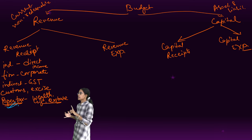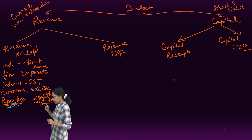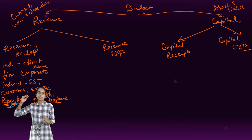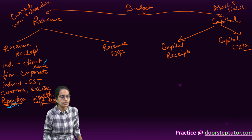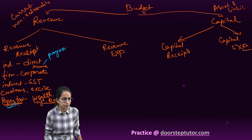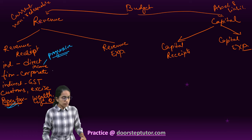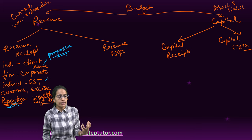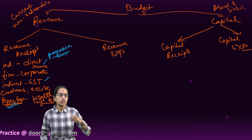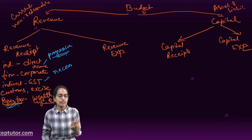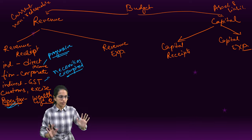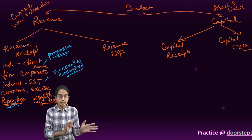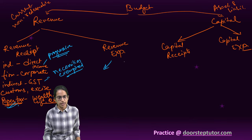Important to note: income tax is progressive — as your income increases, the amount of tax you pay increases. In indirect taxes on goods and services, necessities are exempted. This concludes revenue receipts; moving on to revenue expenditure.